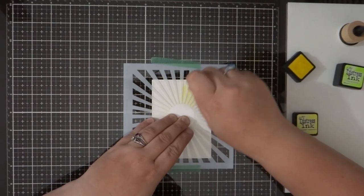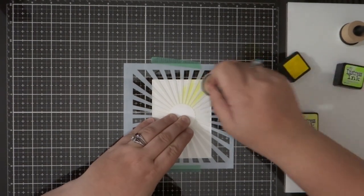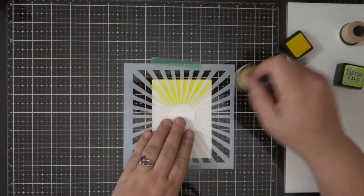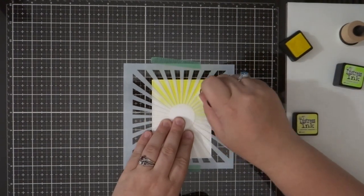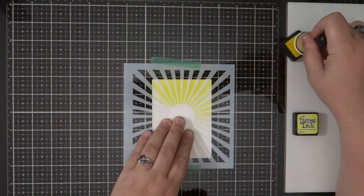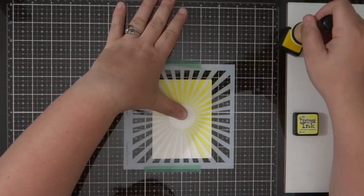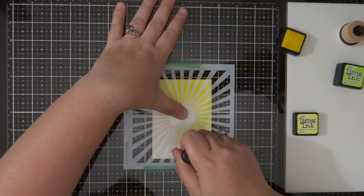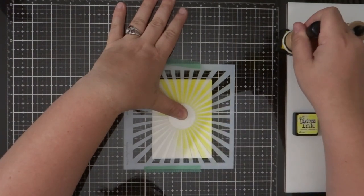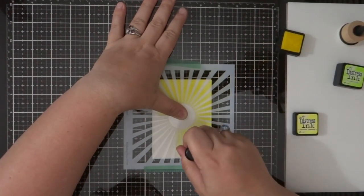And all the products that I use are listed down below and on my blog. But I'm using this new to me MFT Radiating Rays stencil and ink blending with some squeezed lemonade distress ink. And look how that turns out.